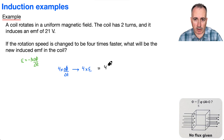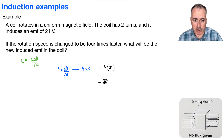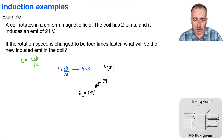That's just equal to four times 21. Four times two is eight, four times one is four, so that means you just get 84. So the induced EMF, E₂, is going to be 84 volts. And we're done.